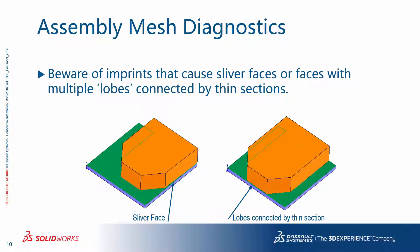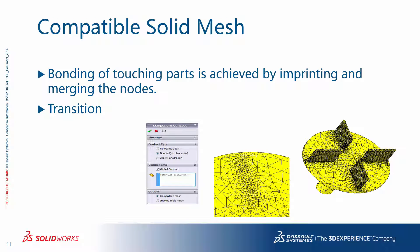Beware of imprints that cause sliver faces or faces with multiple lobes connected by thin sections. When you mesh parts in assemblies using compatible meshing, the bonding of touching parts is achieved by imprinting and merging the nodes at the interface, so there are common nodes at the interface. Because there is a potential element size difference around the interface, there will be a transition of element size, and if that relative size is too large, you may run into meshing issues.